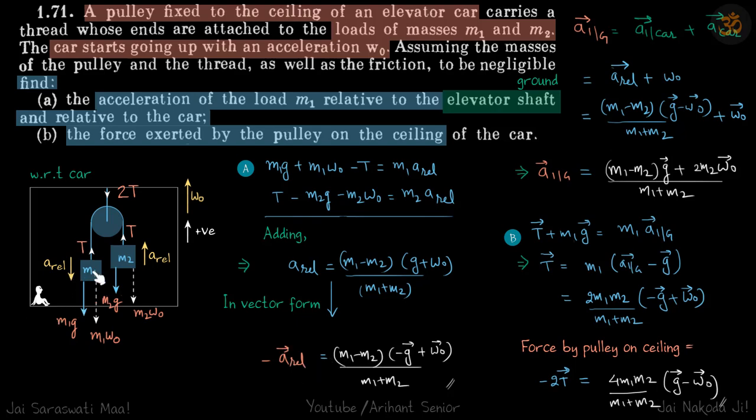Now let's talk about acceleration of M1 with respect to ground. That will be simply A of M1 with respect to car plus acceleration of car. So this is A relative. We have written all that in vector form already, plus W naught vector. If you solve this you will get this.